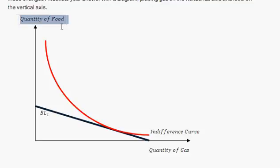Okay, so that's what we've done here. Quantity of food on the vertical axis. So this is a high quantity of food, this is a low quantity of food. Quantity of gas on the horizontal axis. Then here you've got a low quantity of gas, up here you've got a high quantity of gas. And then here I just put an arbitrary indifference curve.